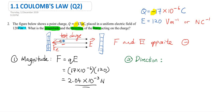To find the force, use the formula F equals QE — just Q multiplied by E — and that gives you the magnitude. The direction, as we determined, is to the left, since the negative charge is attracted toward the positive plate and F is opposite to E. So the answer for direction is to the left.